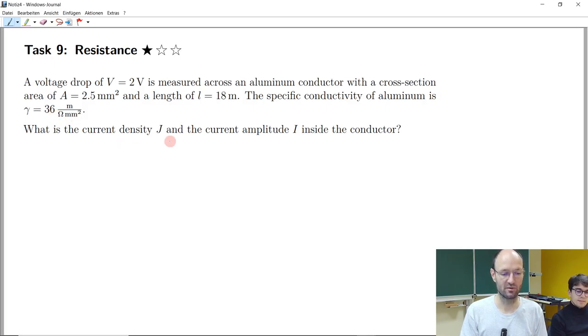And so now the question is what is the current amplitude and what is then maybe also the current density inside this conductor? So ideas to calculate this. Yeah, we can use the formula that resistance is voltage divided by current. And we know the voltage drop and we could calculate the resistance. How can we calculate the resistance?